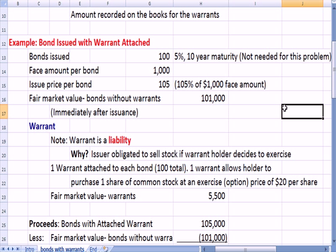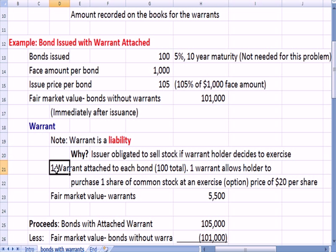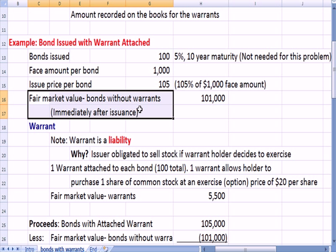Let's talk further about what a warrant is. A warrant is a liability in that the issuer — the person who issues the bond and the warrant — is obligated to sell stock if the warrant holder decides to exercise the warrant and buy stock. In this example, we have one warrant attached to each bond, and there are 100 bonds total, which means there are 100 warrants. One warrant allows the holder to purchase one share of common stock at an exercise or option price of $20 a share. The fair market value of the bonds without the warrants is $101,000, and the fair market value of the warrants themselves is $5,500.